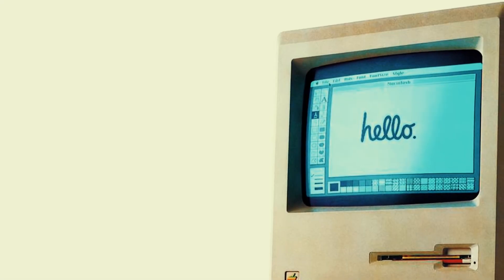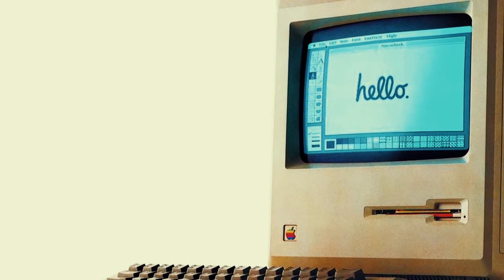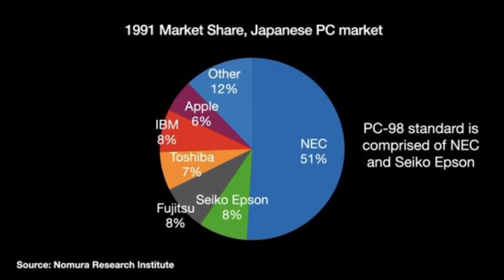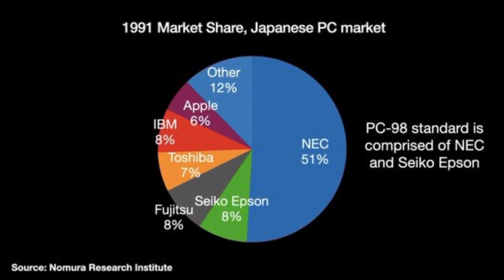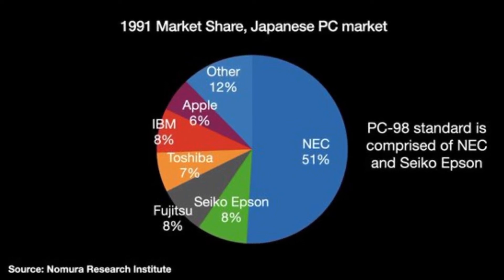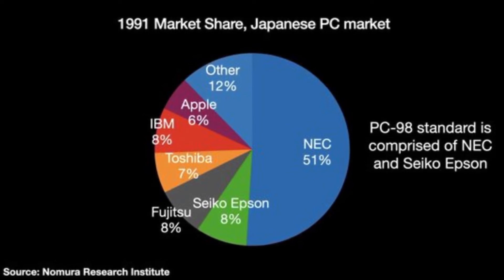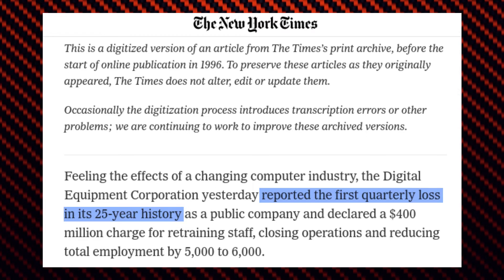The failure to claim a significant portion of the PC market played a major role in sending this great American company into oblivion. When the 90s kicked in, not only Digital but also IBM struggled to maintain their historic dominance as the industry shifted away from mainframes and minicomputers toward personal computers and workstations. As a result, Digital recorded its first quarterly loss since its inception, leading the company to significantly reduce its workforce and close operations.